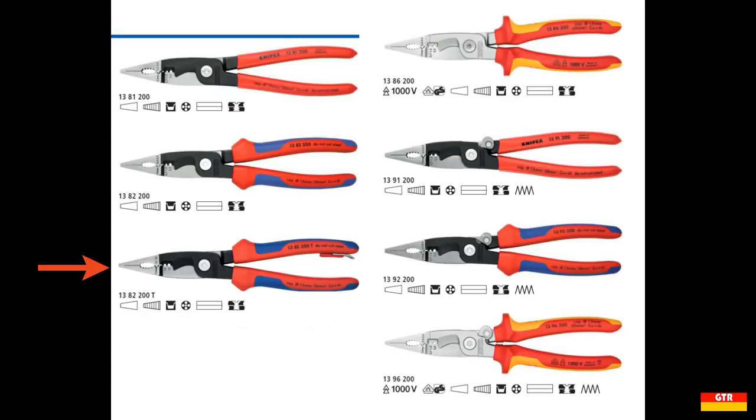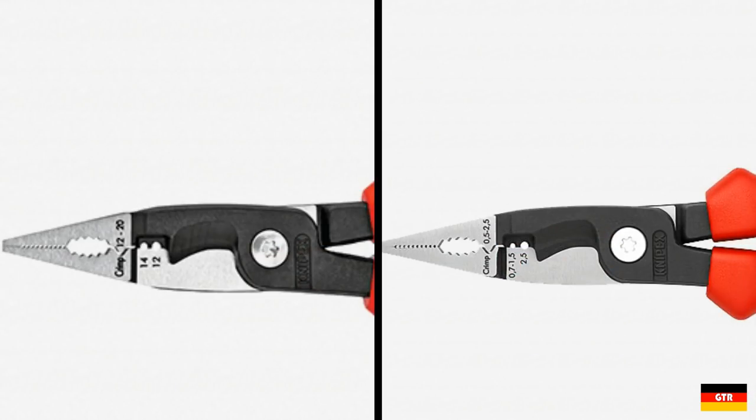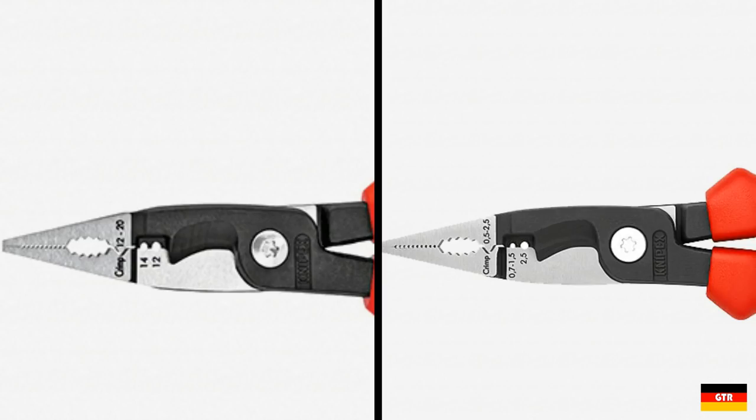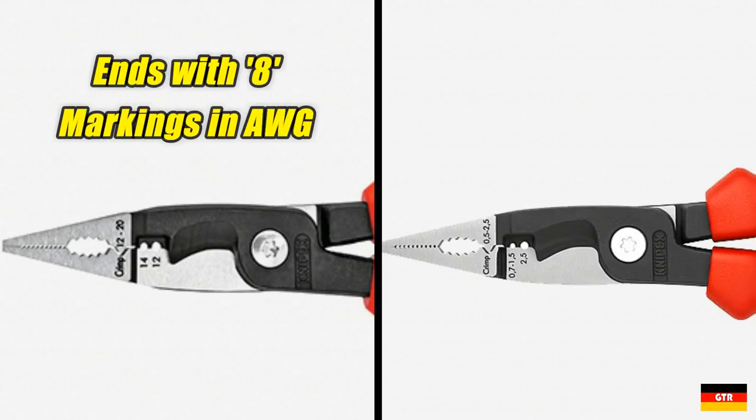There's also one additional model ending in T that includes a tether attachment to be used for fall protection. The third portion of the part number indicates the length of the unit and it's going to be one of two values in the series, either 8 or 200. When marked with 200 for 200 millimeters, this indicates the wire gauges will be marked in cross-sectional area in millimeters. When marked with 8 for 8 inches, this indicates that the wire gauges will be marked in American wire gauge.